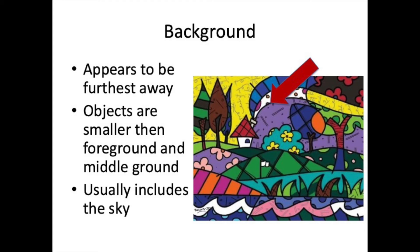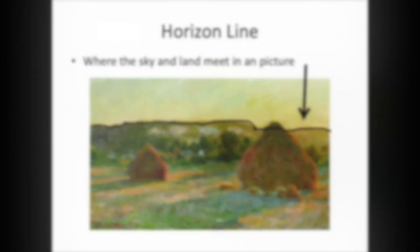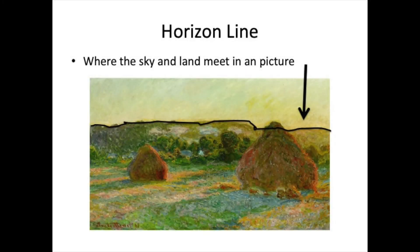The sky is also going to be included in your background. The horizon line is where the sky and the land meet in a picture. You can see here there is a line where the sky meets the land — that is called the horizon line. That's important when making a landscape.